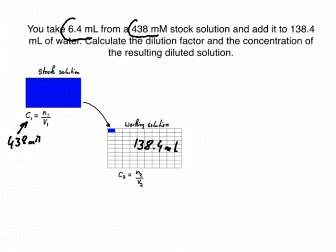So how does that work? What do we know? We know that we take 6.4 milliliters of the stock and we add it to the 138.4 milliliters, and that gives us a total volume of 144.8 milliliters. So that's the total volume, and we can attribute this total volume to V2.